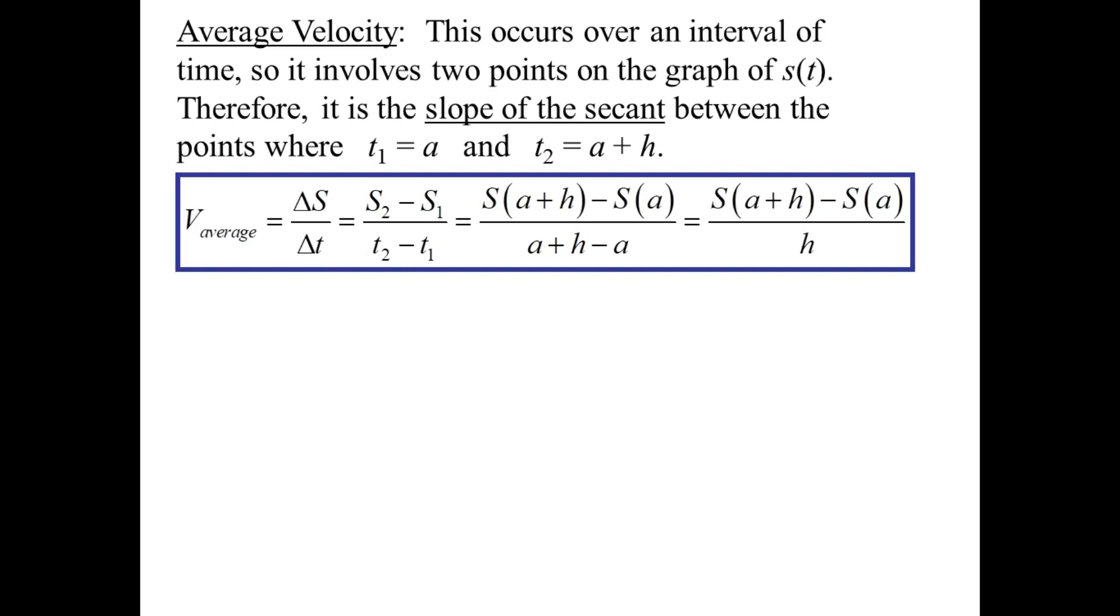And we have some formulas to go along with this concept of average velocity. It's delta s over delta t, so change in displacement divided by change in time. Or we could express it as s of a plus h minus s of a over a plus h minus a. And of course, this simplifies to simply h.